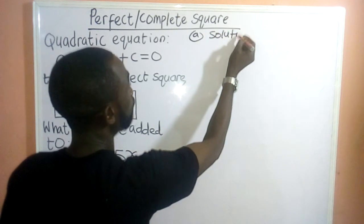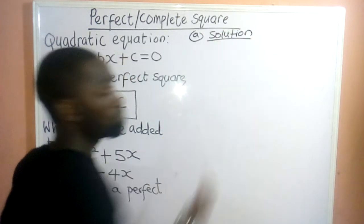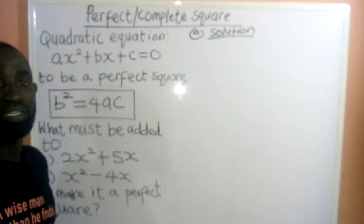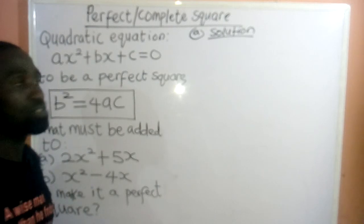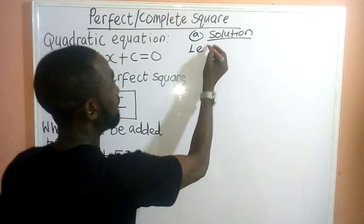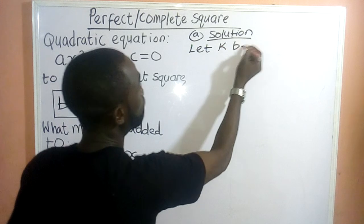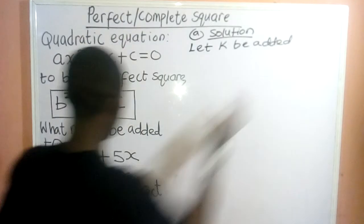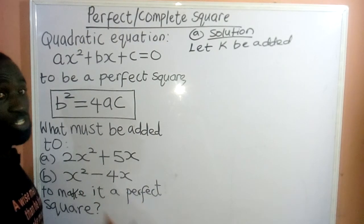We are asked to find what must be added. So, let's assume we want to add k as a constant. Let k be added to this to make it a perfect square.